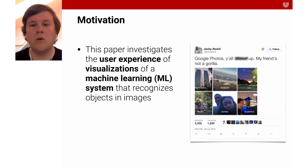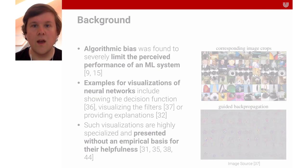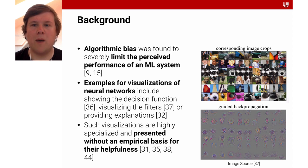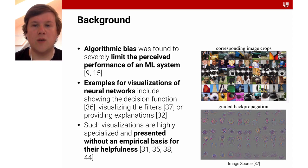Following Luhmann, trust is an important way to cope with risk, complexity, and a lack of system understanding. This work relates to algorithmic bias, which was found to severely limit the perceived performance of machine learning systems. While there are many great examples of visualizations of neural networks aimed at improving algorithmic awareness — by showing the decision boundary, visualizing the filters, or providing explanations — such visualizations are highly specialized and usually presented without an empirical basis for their helpfulness.